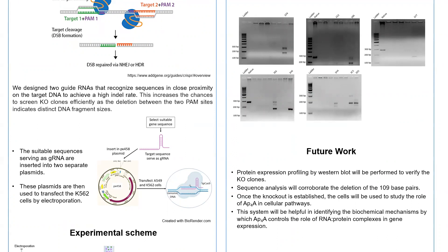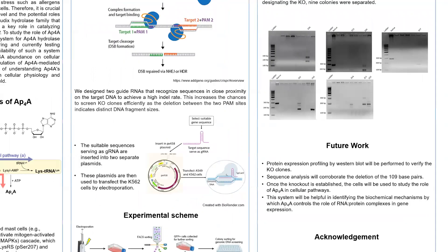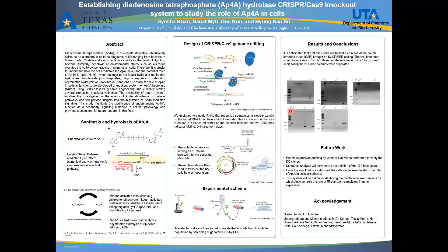When I successfully isolated these colonies, my future plan includes protein expression profiling by Western blot to see if the knockout actually works. I am also currently working on confirming the loss of the 109 base pairs by sequence analysis. Once the knockout is established, we can use it to study the effects of AP4A abundance in cellular pathways and how it affects gene expression in the cells.